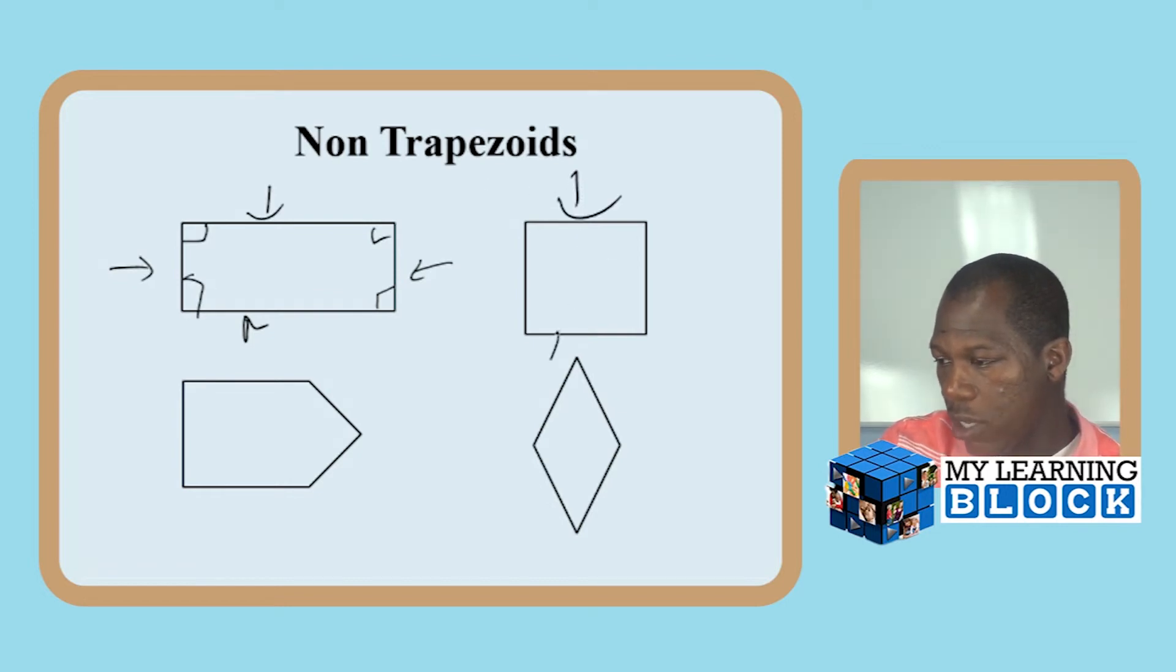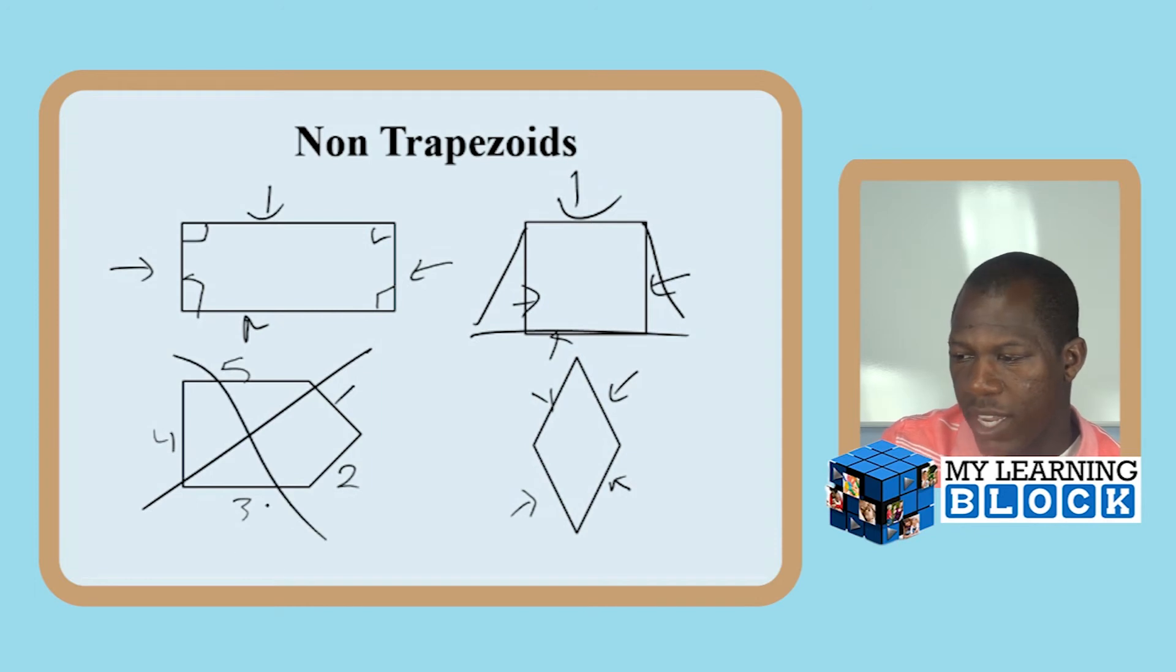Again, we have two pairs of parallel sides. And for this one, two pairs of parallel sides. So they are not trapezoids. Now, if we were to extend that part and keep coming across like that, then we could get it to become a trapezoid. Here we have one, two, three, four, five snuck his way in here, that pentagon.